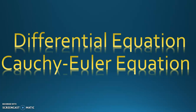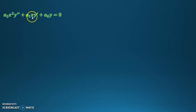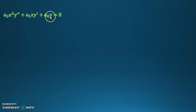Hello everyone. In this video we are going to solve the Cauchy-Euler equation. The Cauchy-Euler equation has this form: x squared times the second derivative of y with respect to x, plus a constant times x times the first derivative of y with respect to x, plus a constant times y, equals zero.